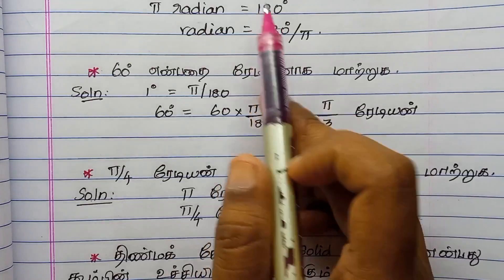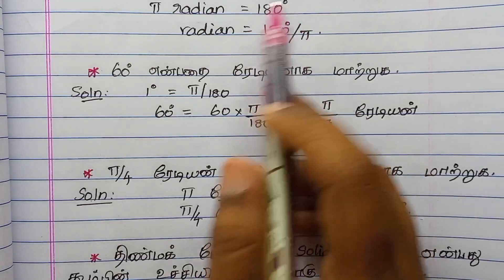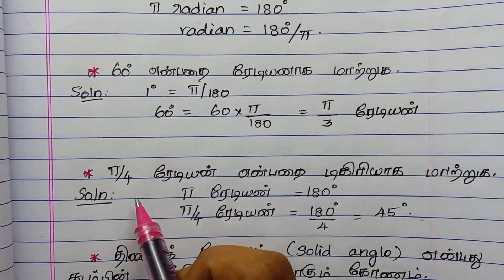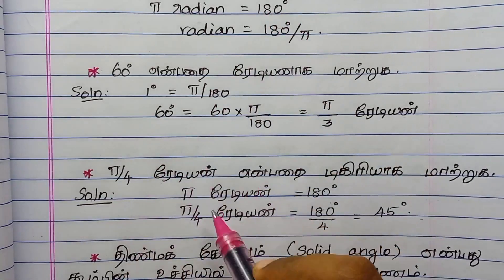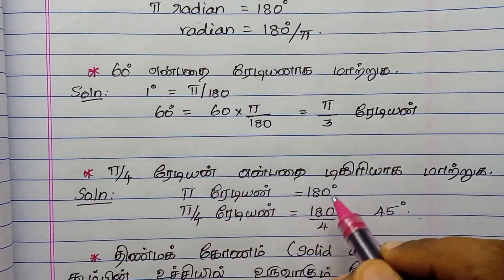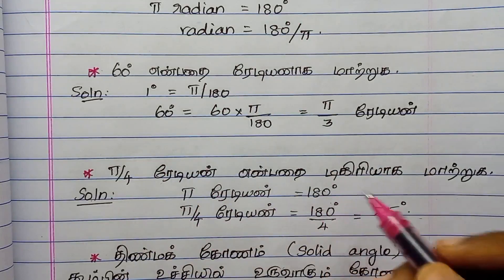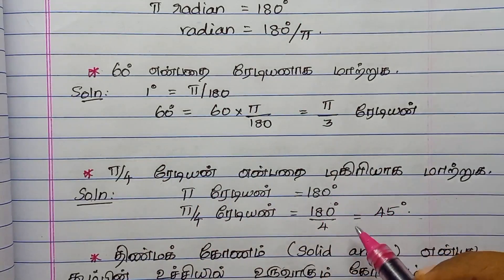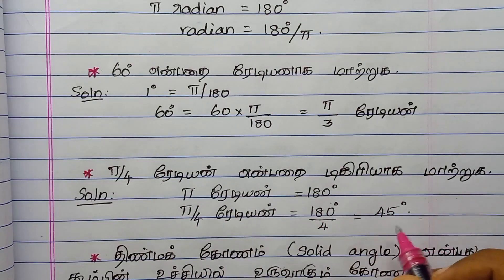For π by 4 radians, we get 45 degrees. So π/4 radians equals 45 degrees.